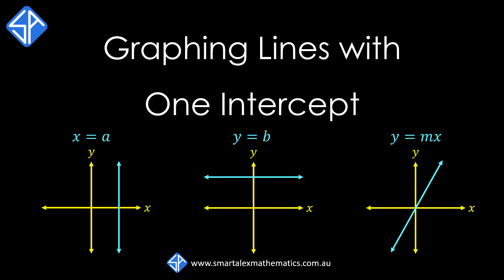In this video we're going to look at how to graph the three types of lines with one intercept. These are the vertical lines, the horizontal lines, and lines through the origin.